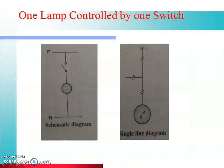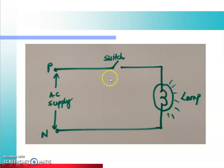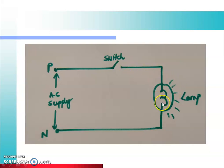Next, hum dekhenge one lamp controlled by one switch. Ek hi lamp hai, ek hi switch hai — us circuit ko kaise control karte hain. Yeh iska schematic diagram hai jisme yeh lamp hai, usse load node kiya gaya hai aur yeh switch hai. Yeh simple circuit hai — jab hum switch ko close karenge, to start se current nikal ke, lamp se hokar end tak pahunchega, to current ko ek continuous path milega aur lamp glow hoga. For a lamp, one live wire and one neutral wire is required.